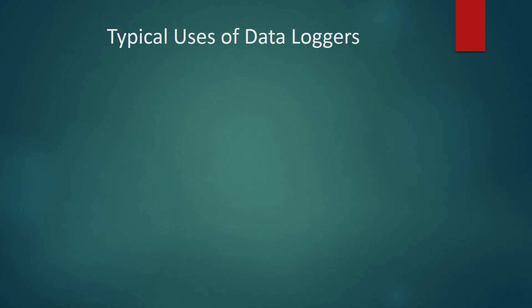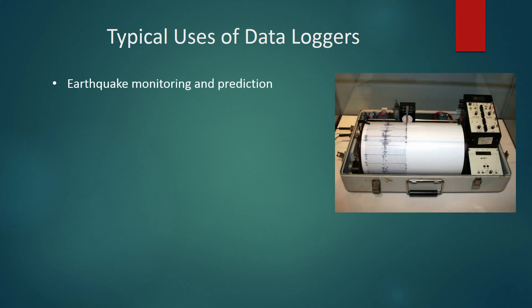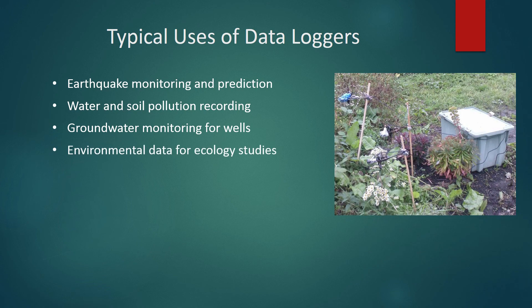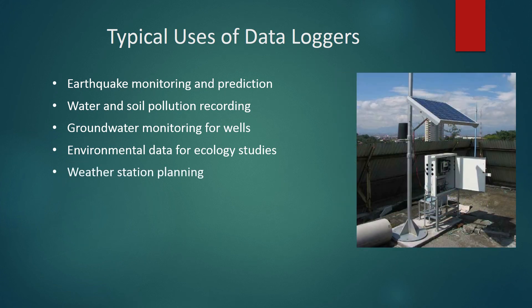Let's take a look at some typical applications of data loggers in environmental monitoring. One of the oldest and still most widely used applications is earthquake monitoring — through modern seismographs, we can take data from all over the world to help predict earthquakes. Recording pollution levels in both soil and water is also a major application, used globally to monitor the effects of pollution, pinpoint its source, and reduce its effects. This also extends into groundwater quality quantification for wells. When performing ecology studies on both flora and fauna, it is crucial to keep log of any environmental factors that could impact the species under study. Weather stations themselves can be considered data loggers, and smaller loggers may be used when planning the placement of a weather station to avoid microclimates that would affect the accuracy of its readings.